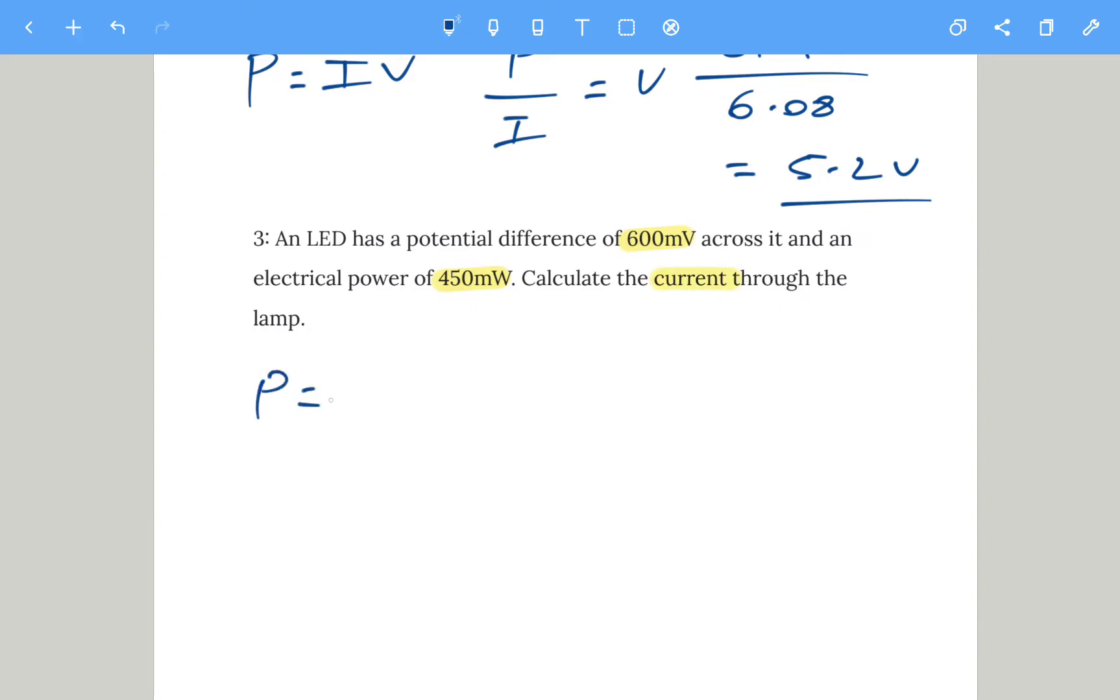So it's the same one, P equals IV. In this one we want current, so we need to get rid of times V. Do the opposite, divide by V on the other side, and that gives us current.